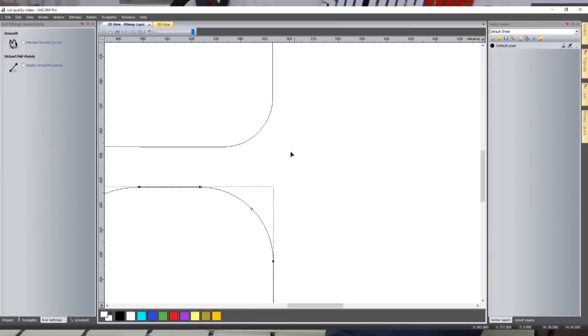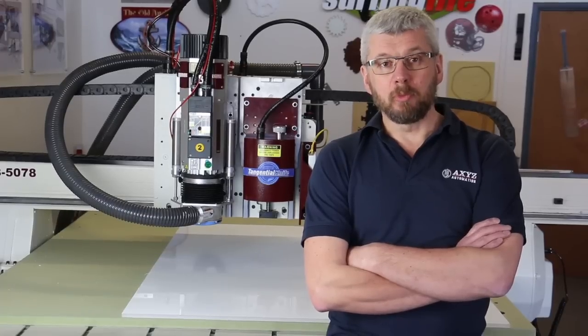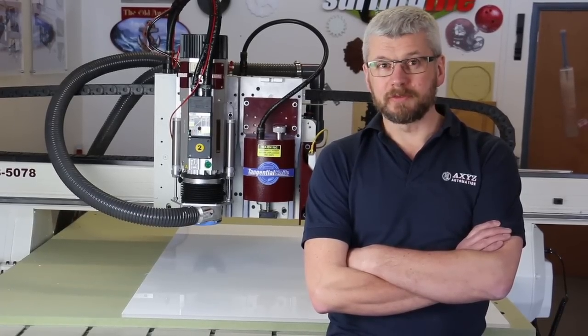If you want smooth curves but your data is a series of faceted lines, then your machine will cut out what you've drawn. I'm going to cut two samples, both with the same settings, but one has faceted lines and the other has smooth curves.